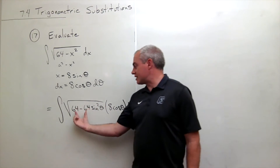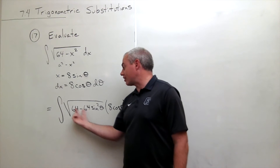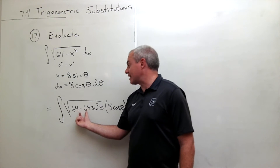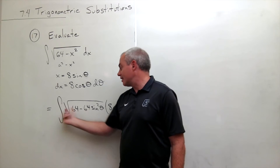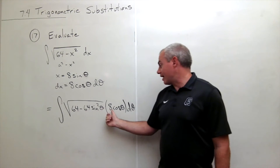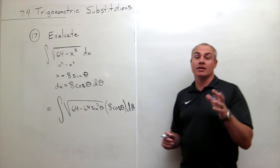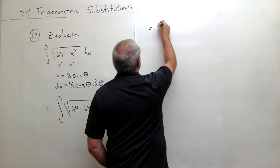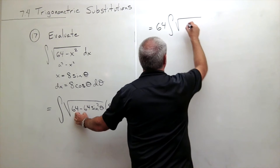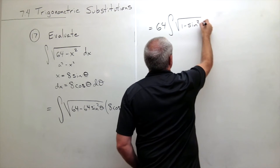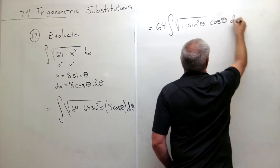The first thing I see here is I've got a 64 as a factor on both terms under that square root. I can take that factor of 64 out of those two terms, and in fact I can take it all the way out of the square root. When it comes out of the square root, that 64 becomes an 8. So I have another 8 here that I can take out, giving me a 64 on the outside. I can rewrite this as 64 times the integral of the square root of 1 minus sine squared theta, times cosine theta d theta.